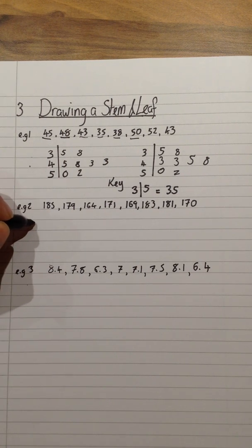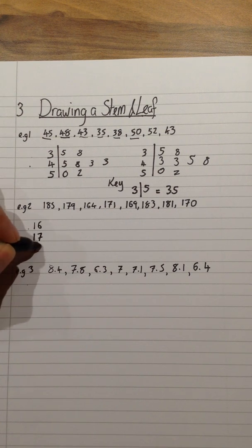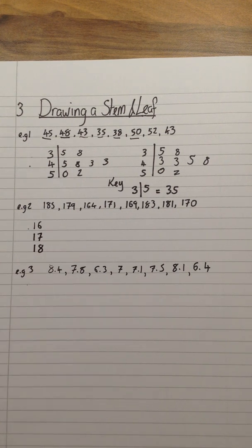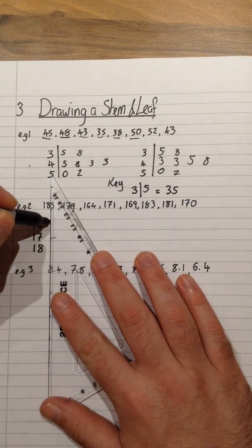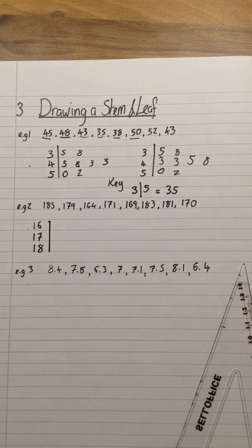So our stem takes up the hundreds and the tens column, because the leaves must be single digits every single time. So this time I will have the numbers 16, 17, and 18. These represent 160s, 170s, and 180s.